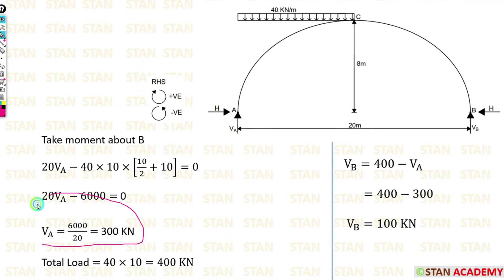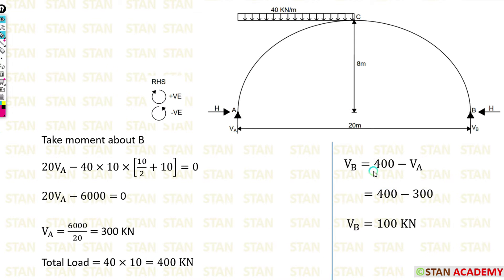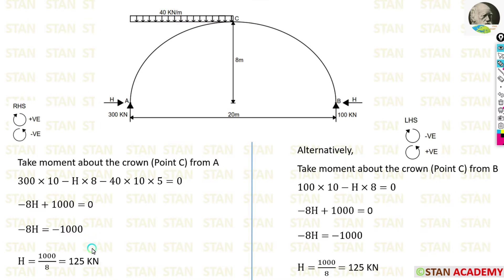For calculating VB, the total load is 40 × 10 = 400 kN. Then VB = total load − VA = 400 − 300 = 100 kN.